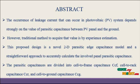The accuracy of leakage current that can occur in photovoltaic system depends strongly on the value of the parasitic capacitance between PV panel and the ground. However, traditional method to acquire the value is by experience estimation.